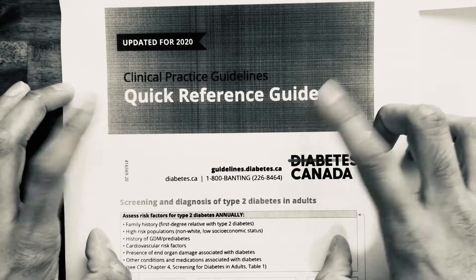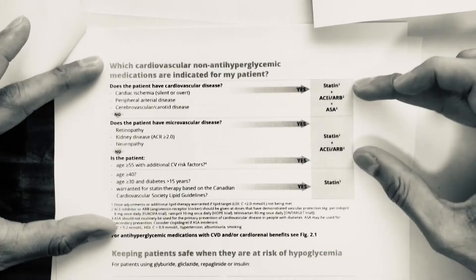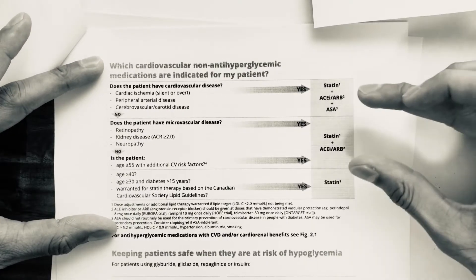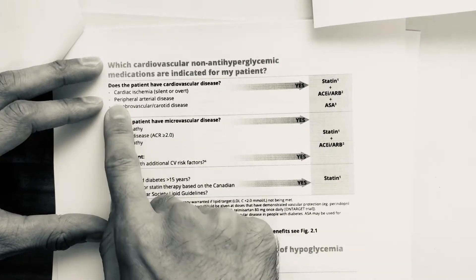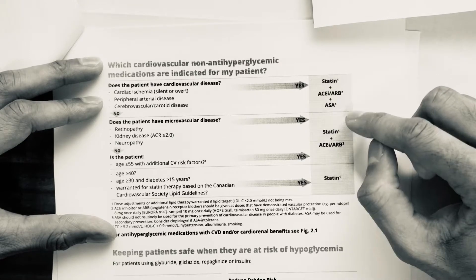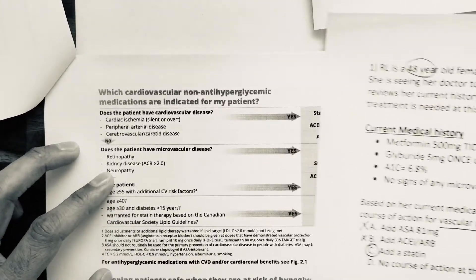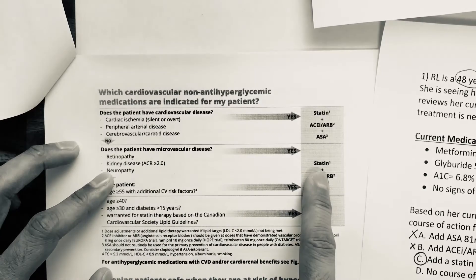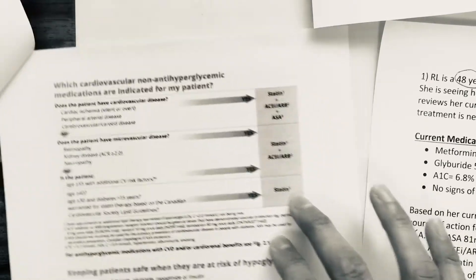Additionally, a very useful reference is the Clinical Practice Guidelines Quick Reference Guide, 2020 edition. This chart shows which drugs need to be added based on the patient's condition. For example, if a patient had a previous heart attack, cardiac ischemia, or peripheral arterial disease, you would add a statin, ACE inhibitor or ARB, and aspirin. If the patient had microvascular complications, they'd be eligible for a statin plus an ACE inhibitor or ARB.